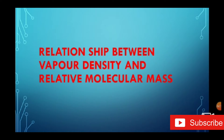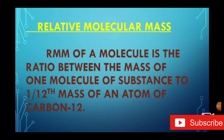Next we learn about the relationship between vapour density and relative molecular mass — this is a very important 5-mark question, so students please learn this carefully. We already know Avogadro's law is used to determine the relationship between vapour density and relative molecular mass. Relative molecular mass is the ratio between the mass of one molecule of a substance to 1/12th the mass of an atom of carbon-12.